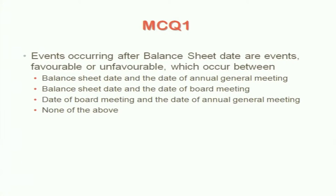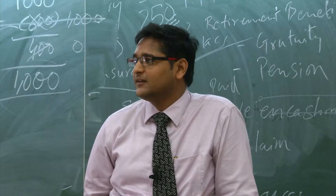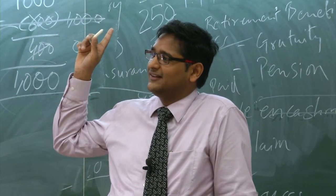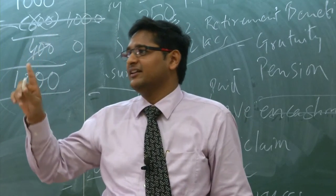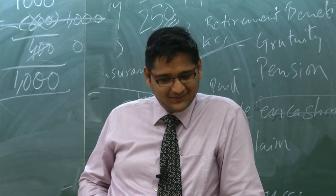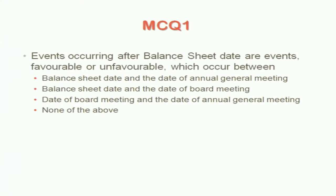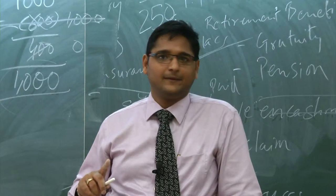To summarize: the event should occur between the balance sheet date and the date of approval. Adjusting event is when the condition was existing as on the balance sheet date - then you go and adjust. Non-adjusting event is when conditions were not existing on the balance sheet date - you do not adjust, only disclose. Regarding DA arrears: the DA for January to March is paid after 31st March, and the amount becomes known before the signing date of the balance sheet - so you should go back and create a liability as on 31st March.